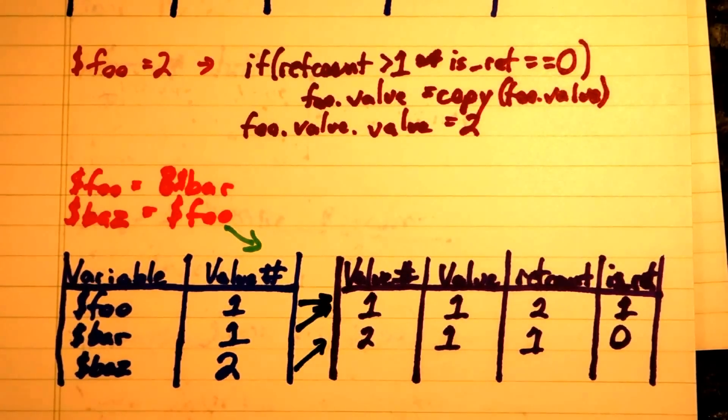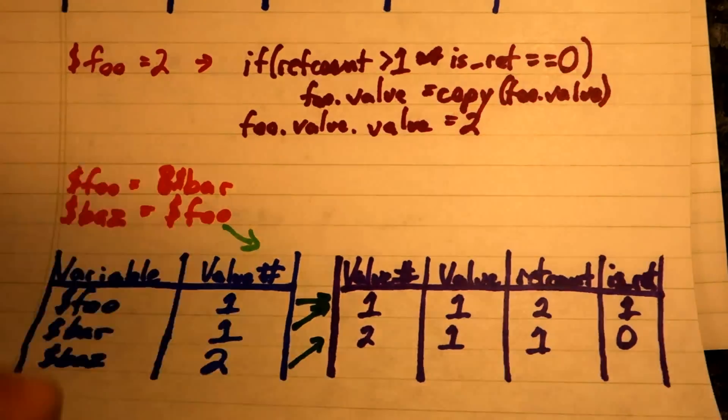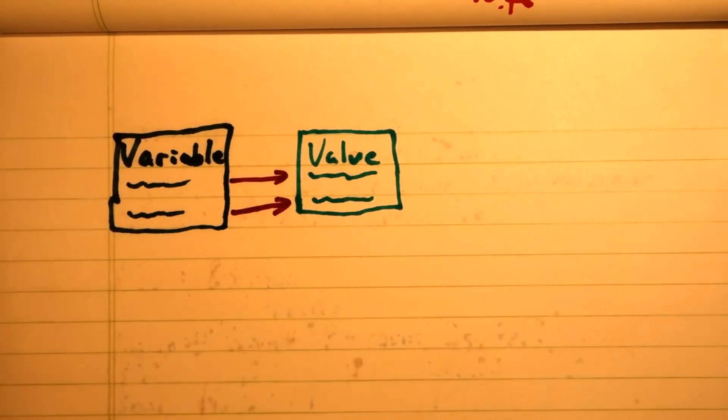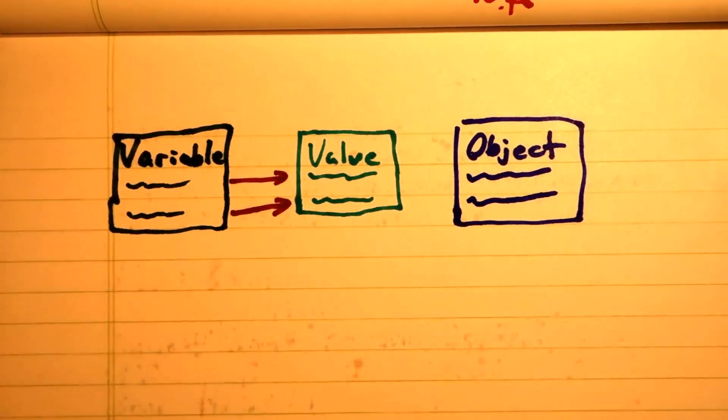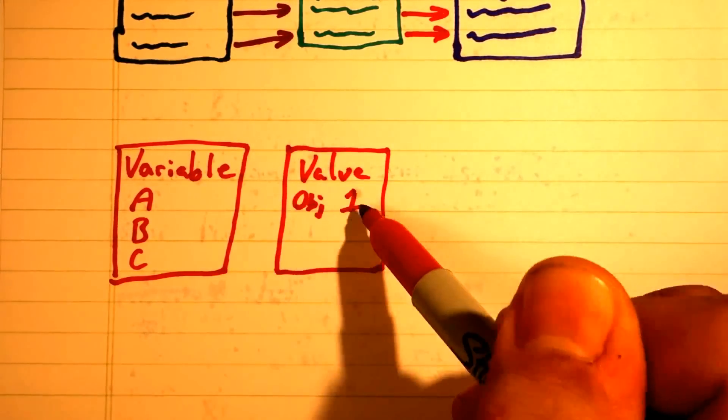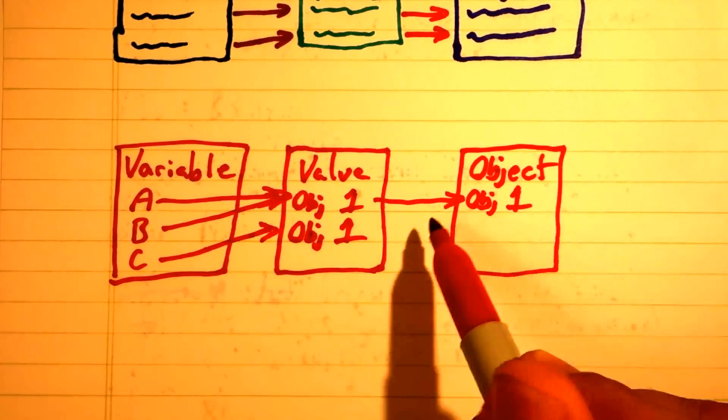In PHP 4, this was how all variables worked. Starting with PHP 5.0, objects are treated in a slightly different way. Instead of storing the object directly on the value itself, there's a second layer of abstraction. Objects are stored in their own container and pointed to by the value.